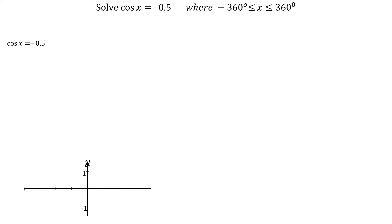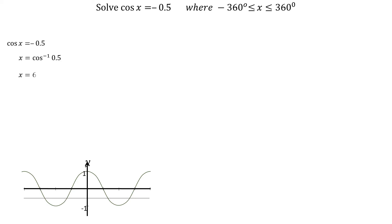To solve cos x equals minus 0.5, where x is between minus 360 degrees and plus 360 degrees, we first need to take the inverse of cos of 0.5, getting x equals 60 degrees. 60 degrees is our reference angle.